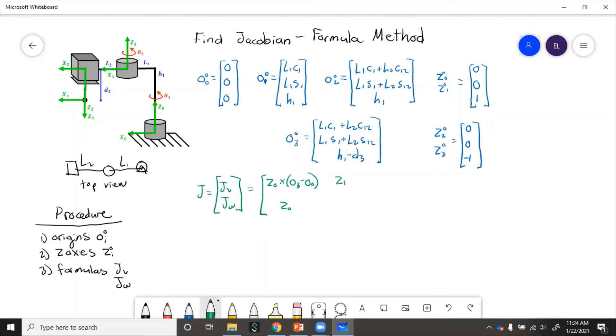Then for the second joint, we'll have z1 because we need to go zi minus one. So two minus one is one, cross with o n, which is three, minus o i minus one, which is o1, and z1.